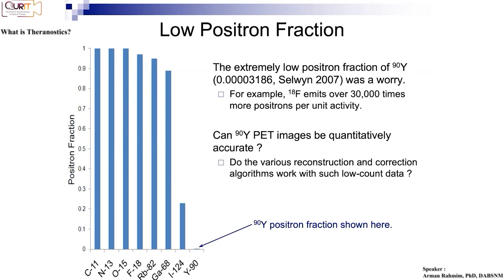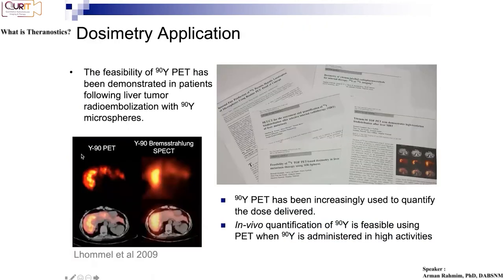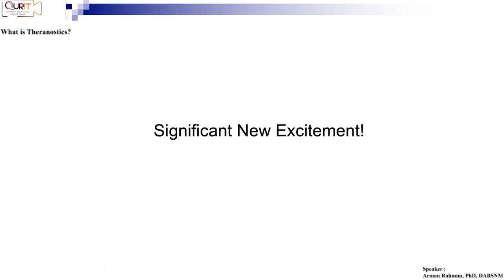Even though the positron fraction is only 30 in a million, PET imaging is so sensitive that — because so much activity is concentrated in liver tumors for therapeutic purposes — you can actually get pretty decent PET images, and they look better than bremsstrahlung SPECT images. PET has higher sensitivity than SPECT, and bremsstrahlung x-rays span a wide energy range making scatter correction very difficult. So bremsstrahlung SPECT is barely quantitative, whereas with PET you can get quantitative numbers.